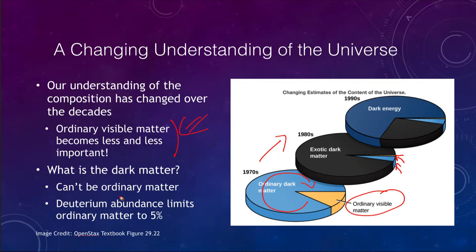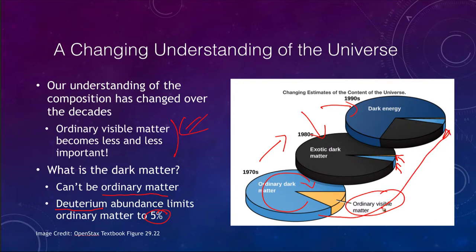What is dark matter? We know it cannot be ordinary matter, because we can study the abundance of deuterium, and that tells us ordinary matter is limited to about 5% of the universe. The rest has to be some kind of exotic dark matter — as we thought in the 80s — and then dark energy, which took over in the 1990s. So what we thought in the 1970s made up the universe is now just about 5% of it.